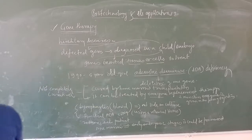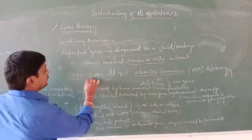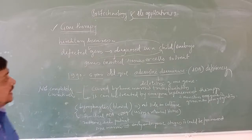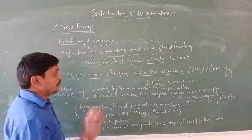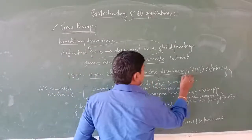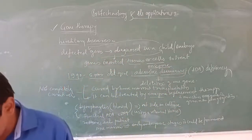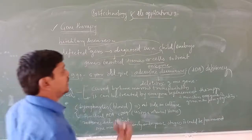The first clinical gene therapy was given in 1990 to a four-year-old girl suffering from Adenosine Deaminase (ADA) deficiency. Adenosine Deaminase is an enzyme that is crucial for immune function.